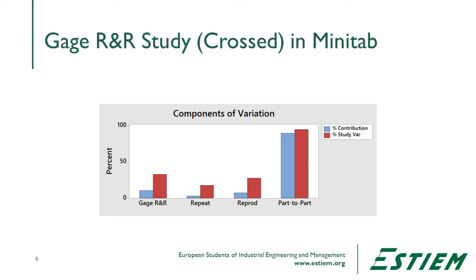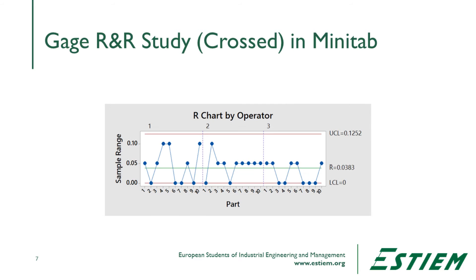To see where the issues are happening, we look at the R chart by operator — the range across which the operators are performing. With three different operators, operator three is never getting above the middle, operator two gets above the middle once, and operator one is quite variable compared to the other two. There's a big difference in the measurement system, showing how the operators compare to each other.